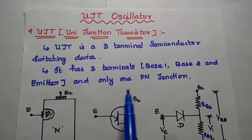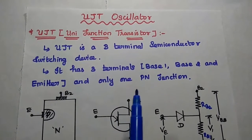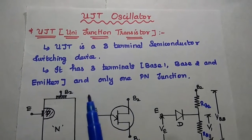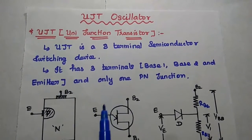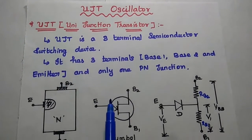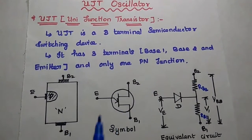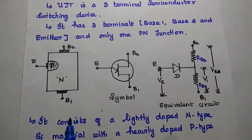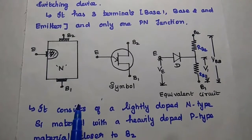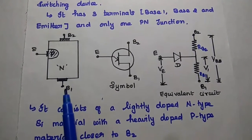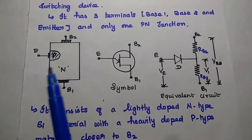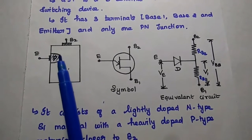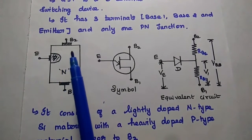Since it has only one PN junction, it is known as unijunction. It has three terminals, hence it is also referred to as transistor. This is the structure of UJT. It consists of a lightly doped N-type semiconductor material and heavily doped P-type material which is placed closer to B2.